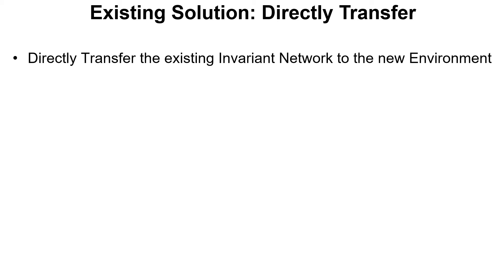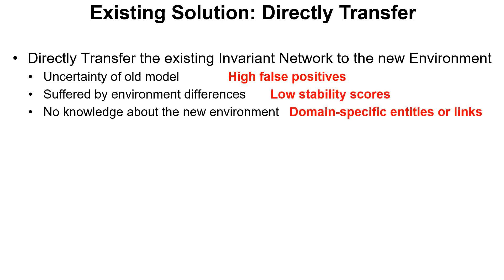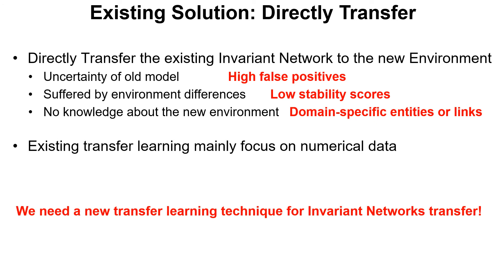However, direct transfer suffers from the domain variety problem, because different domains have very different system behavior. Transfer learning techniques are designed to solve the domain adaptation problem, but existing transfer learning techniques cannot be used on invariant networks. So we need a new transfer learning technique for transferring invariant networks.